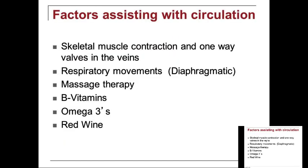Platelets are involved in clotting. In terms of blood and circulation, simple ways to increase circulation: just move. Every time you move, you pump every fluid in the body — not just blood, but lymph and cerebrospinal fluid. Skeletal muscles contract and there are one-way valves in the veins. Someone standing in a choir or military should do some dorsiflexion and plantar flexion to pump venous return. Breathing and diaphragmatic contractions help increase circulation. Massage therapy, B vitamins, omega-3s, resveratrol, and garlic all increase circulation.